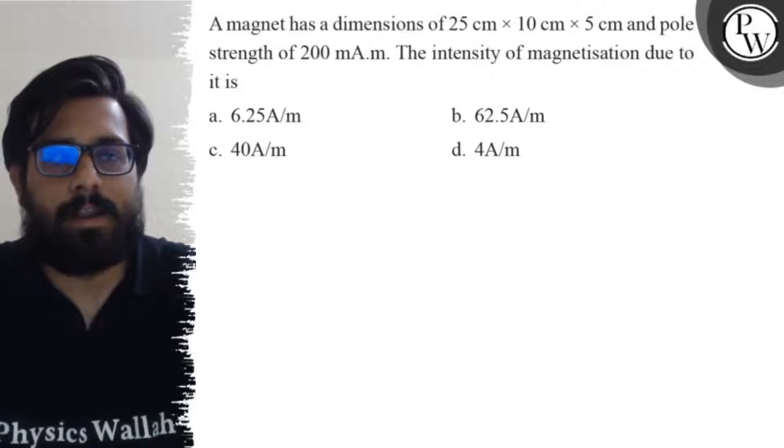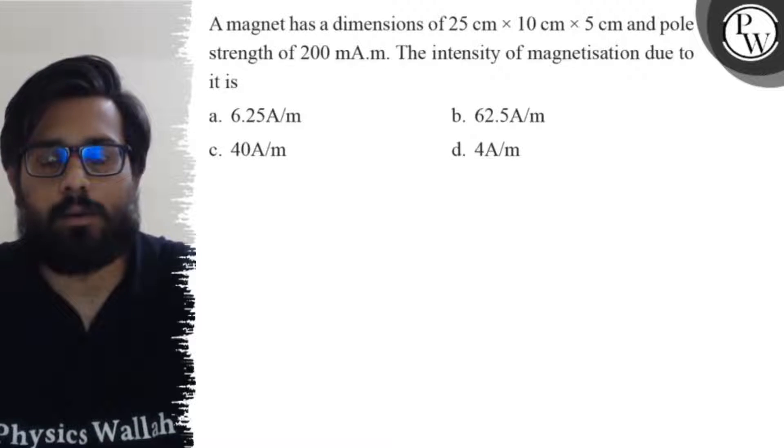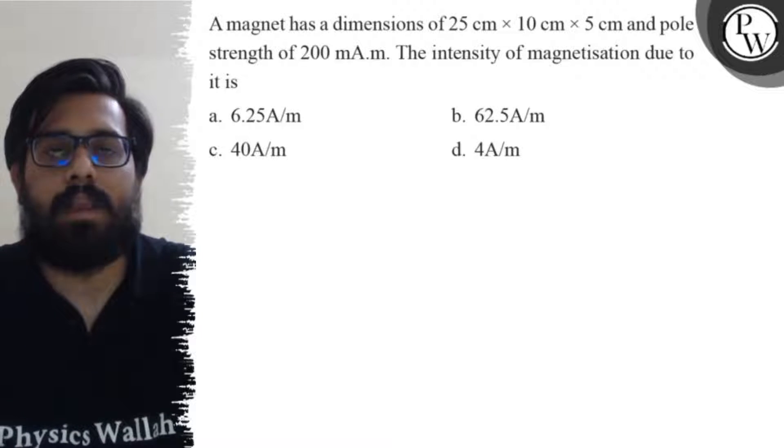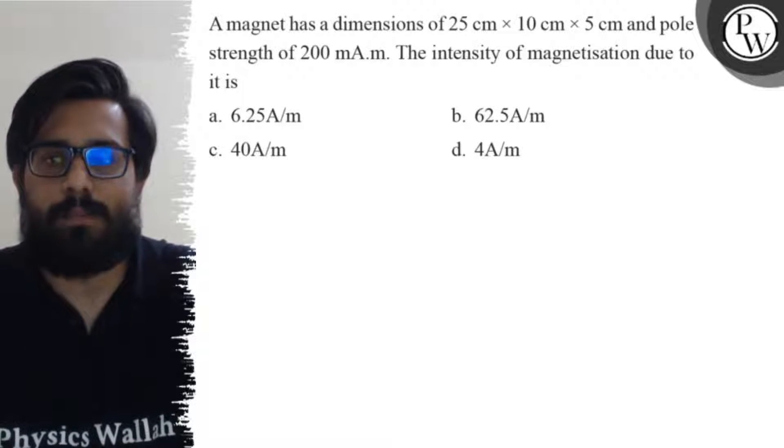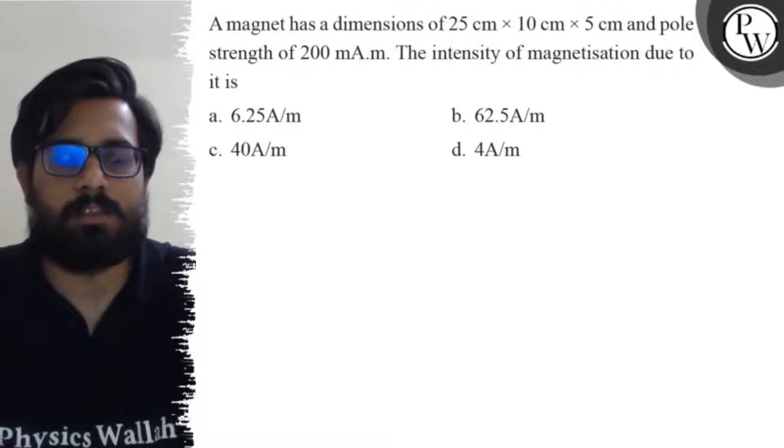Hello students, let's see the question. A magnet has dimensions of 25 centimeter × 10 centimeter × 5 centimeter and pole strength of 200 milliampere meter. The intensity of magnetization due to it is: